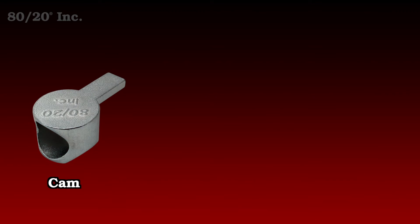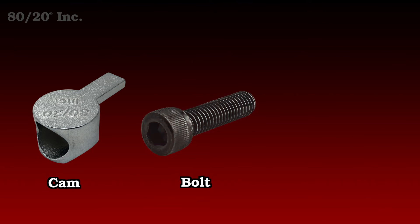Now the anchor fastener comes in three parts. First you have the cam, then you have the bolt, and then you have the t-nut.